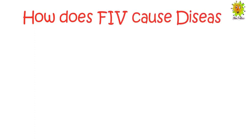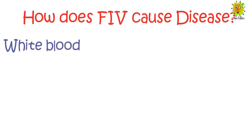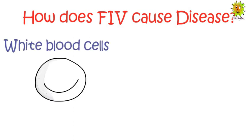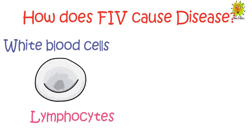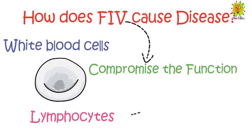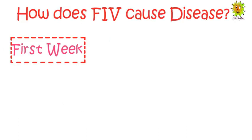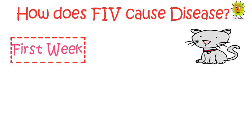Skin redness, wounds that don't heal, hair loss, frequent urination, behavioral change, and neurological disease. Now we see how FIV causes disease. FIV infects white blood cells of the immune system, specifically lymphocytes. The virus kills these cells and compromises their function, eventually damaging the cat's immune system.